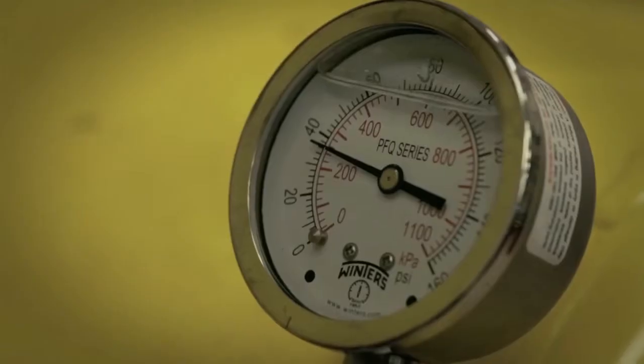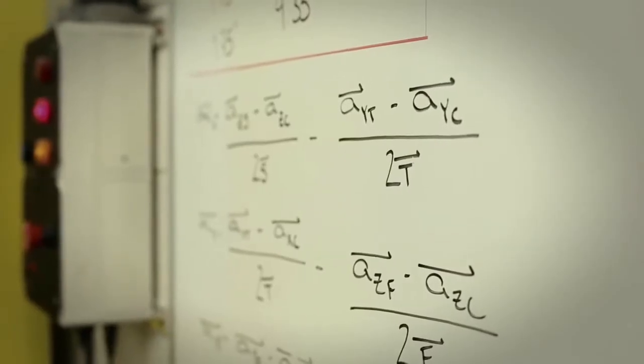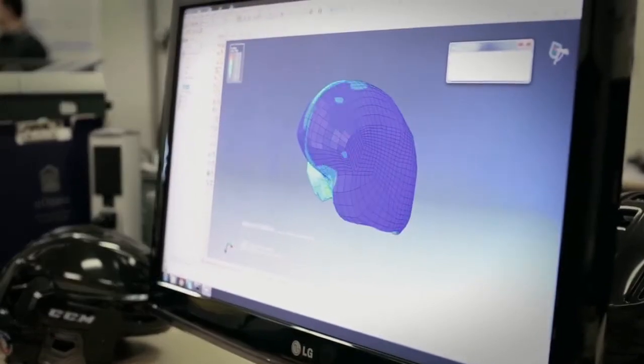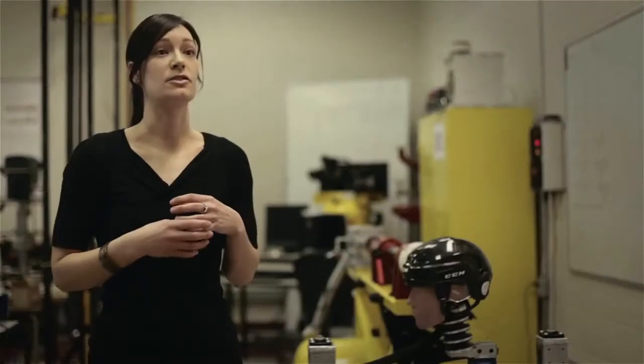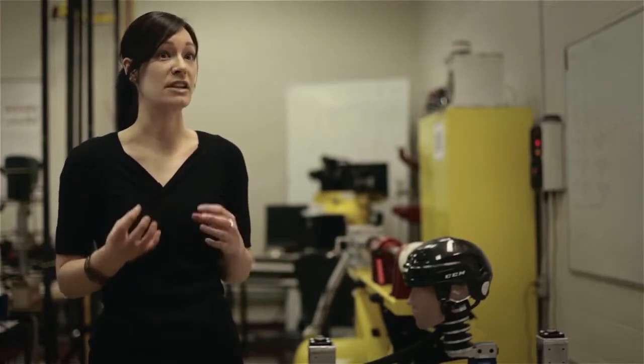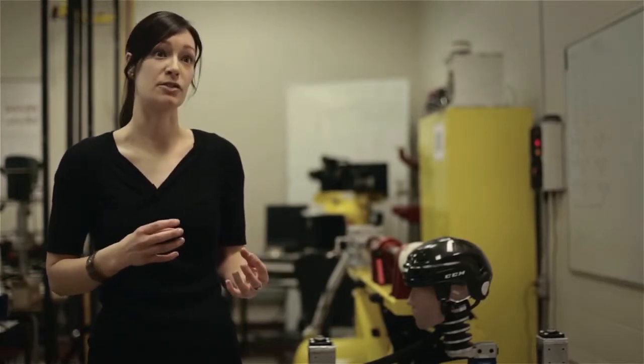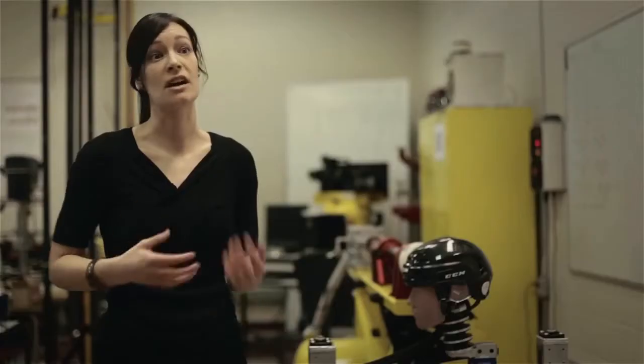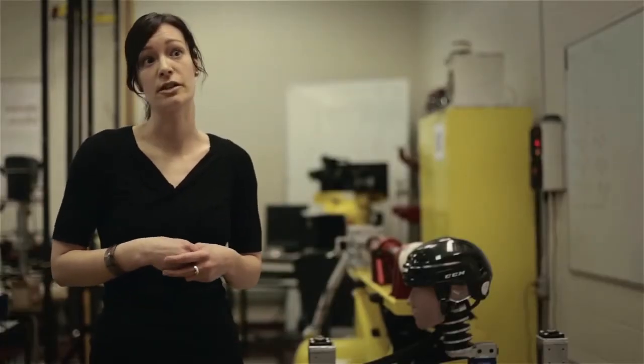We take both the rotational and the linear acceleration time curves and we input that into our brain model. And there we can see where and to the extent of how much stress and strain is actually being put on the brain tissue. And that's what actually manifests itself through these signs and symptoms that you would typically see in a concussive injury.